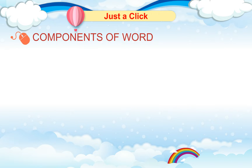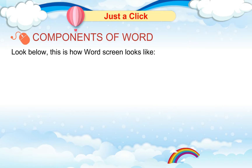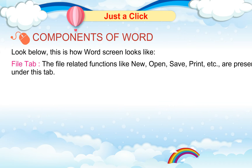Components of Word. Look below — this is how the Word screen looks like. File Tab: The file-related functions like new, open, save, print, etc. are present under this tab.